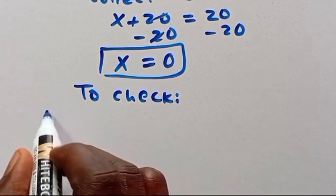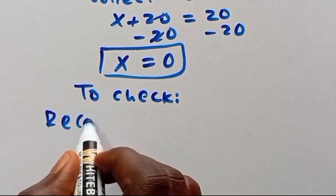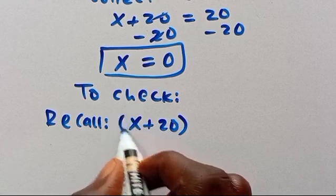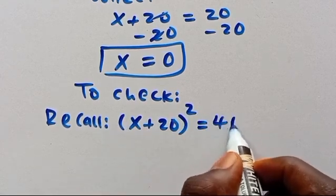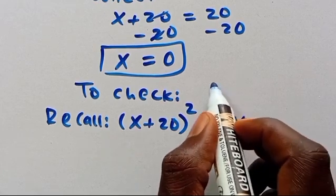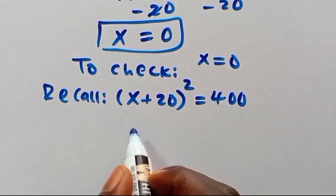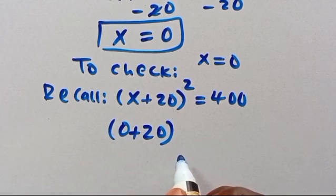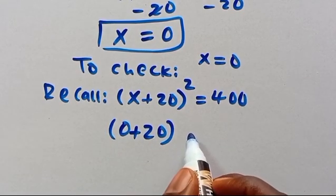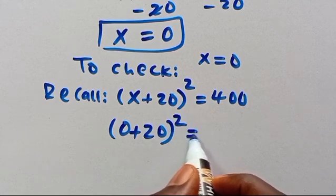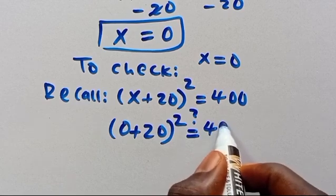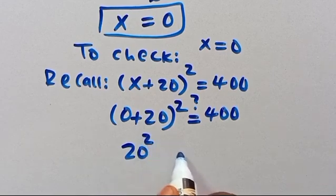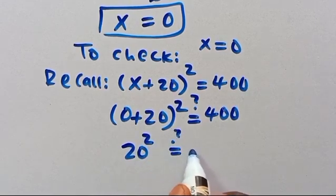Recall we have (x+20)² = 400 when x = 0. Substituting: (0+20)² = 400. 0+20 gives us 20, so 20² = 400.